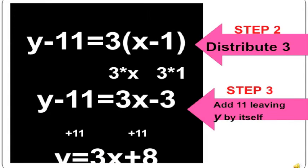After plugging in the given information — the point (1, 11) — we have the equation y minus 11 equals 3 times (x minus 1). Remembering our order of operations, we must first distribute the 3 into the parentheses — multiplying both x and 1 by 3 — giving us y minus 11 equals 3x minus 3. Now, to isolate y and put the equation in slope-intercept form, we add 11 to both sides, which gives us y equals 3x plus 8.